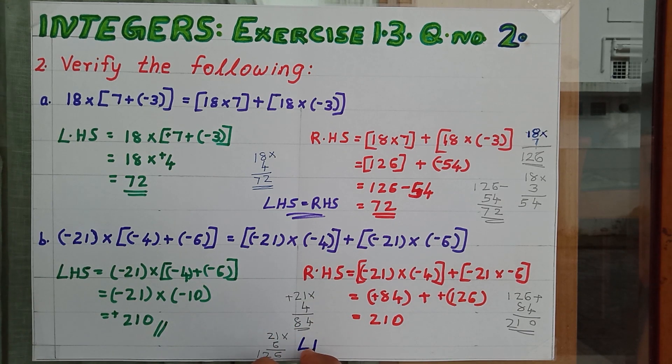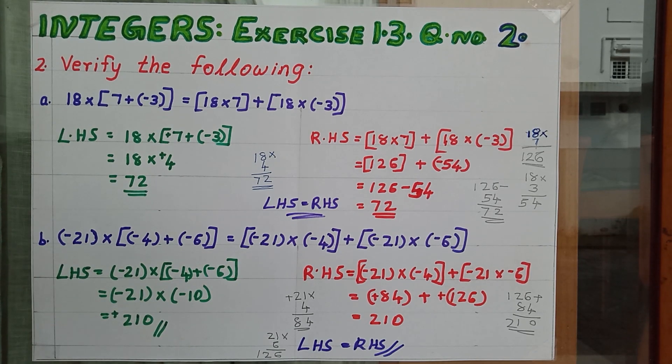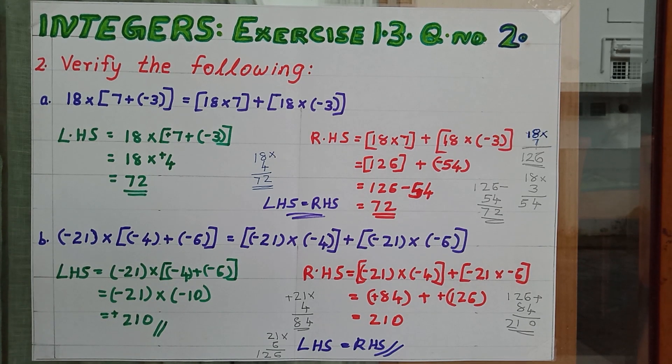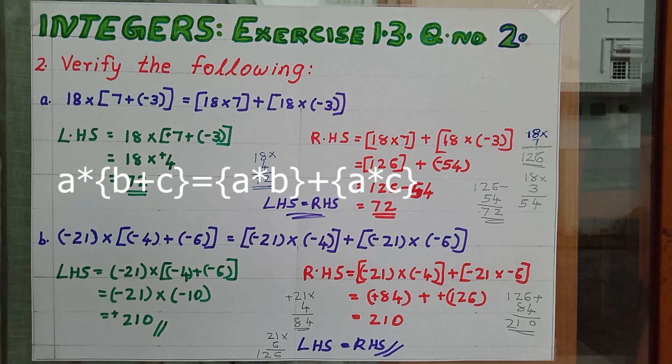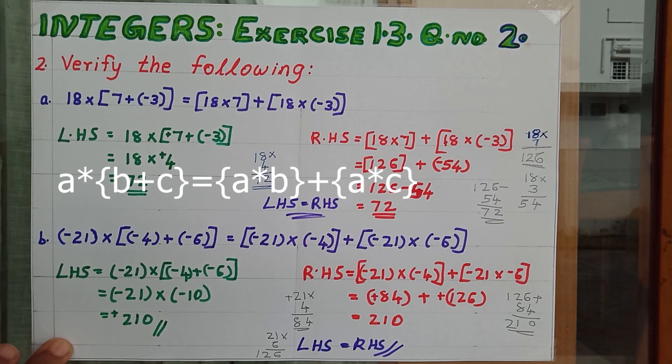So we can write down LHS equal to RHS. So we have verified both these questions. What do we verify here? We verified the distributive property of integers. What is the distributive property of integers? That means A into B plus C equal to A into B plus A into C.